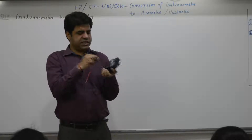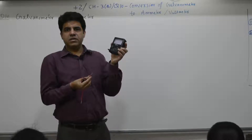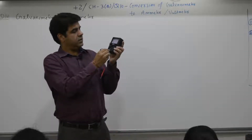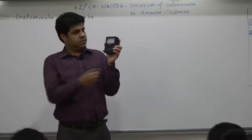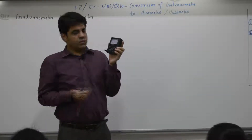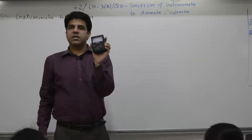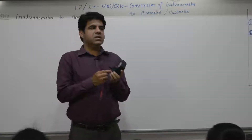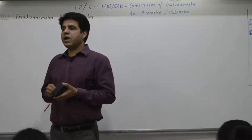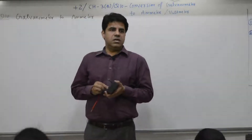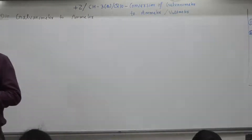How we change it is by changing the resistance. If you place a resistance in parallel, it becomes an ammeter; if you place a resistance in series, it becomes a voltmeter.